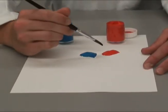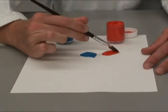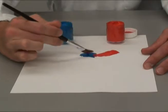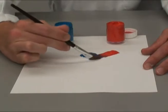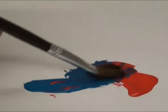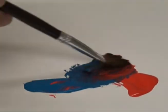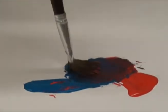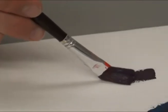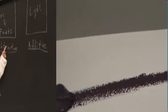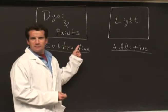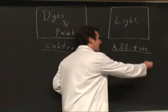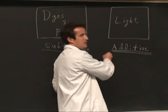If we mix red and blue together, we'll now get less red and less blue, and no yellow. The result is purple. The mixing of light is in no way similar — it's additive.